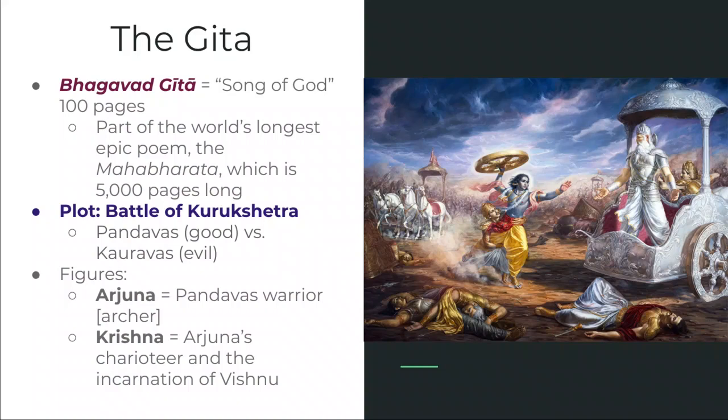Arjuna is about to go into battle against members of his own family, but he is having a very intense internal dilemma because he finds himself torn between different dharmas or duties. Specifically, he wants to fight for good and feels obligated to as a warrior, but understands that killing, especially members of one's own family, is an evil act. So he is torn between his obligations to his family and his obligations to his caste as a warrior.